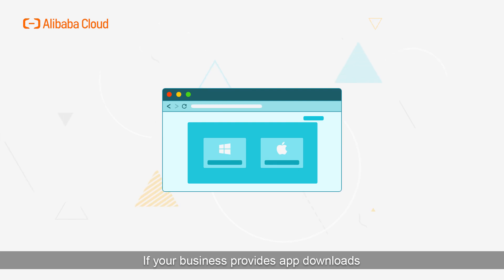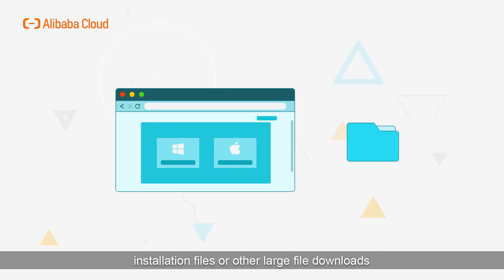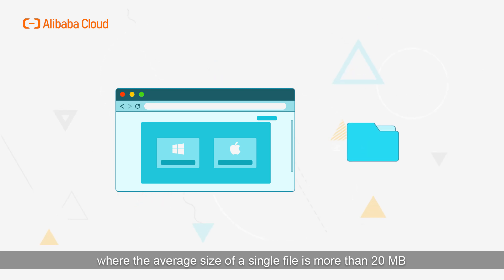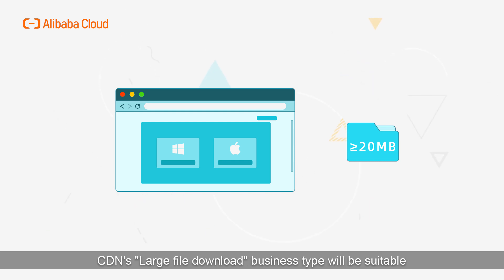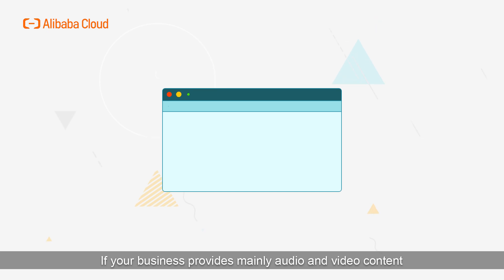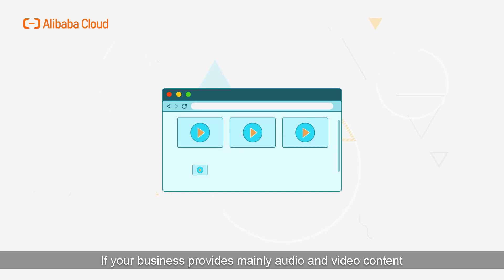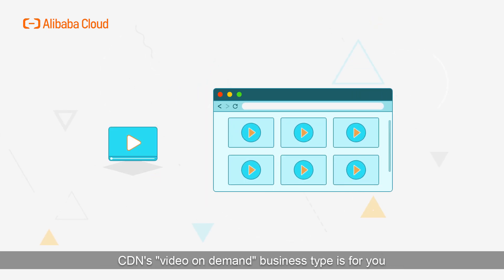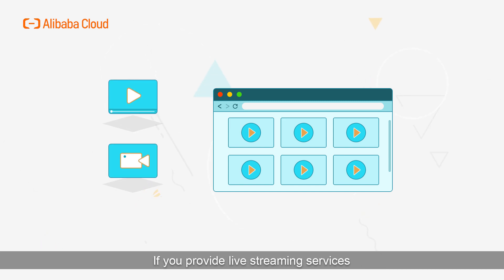If your business provides downloads — video downloads, installation files, or other large file downloads where the average size of a single file is more than 20 megabytes — the Large File Download business type will be suitable. If your business provides mainly audio and video content, the Video on Demand business type is for you. If you provide live streaming services, the Live Streaming business type will be best.